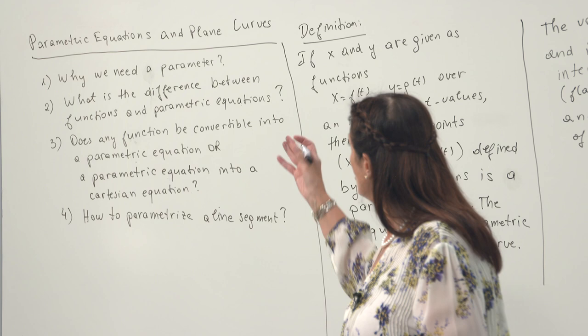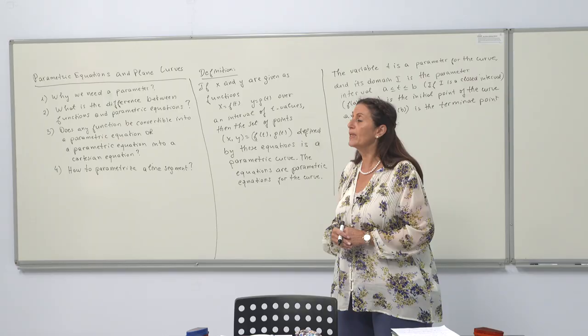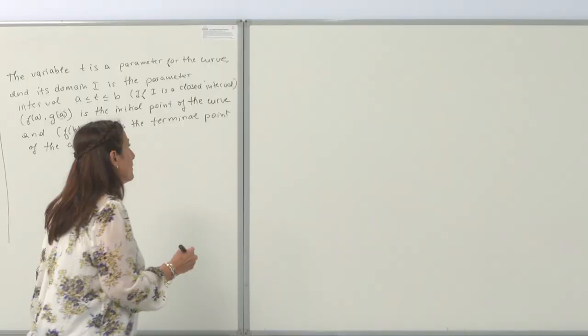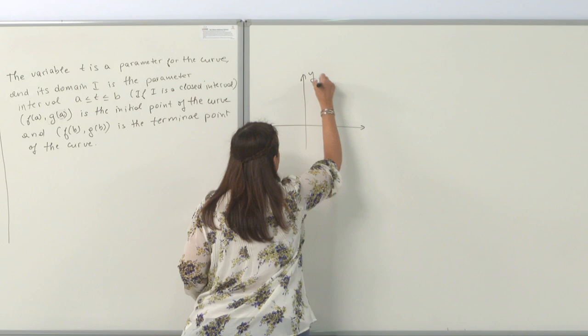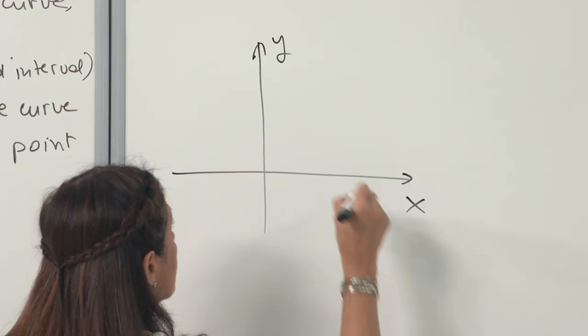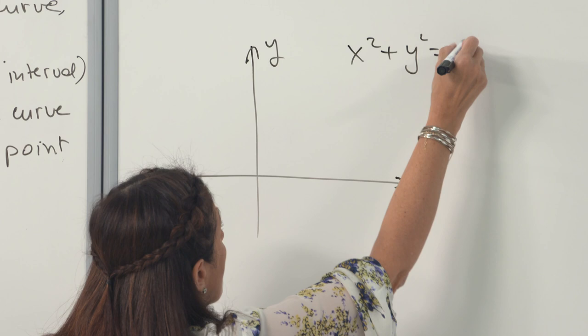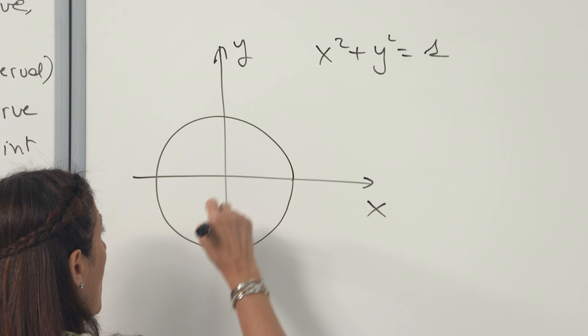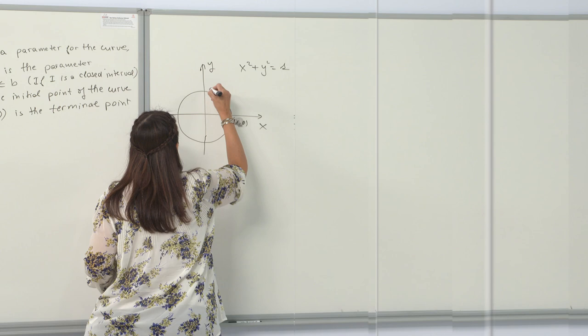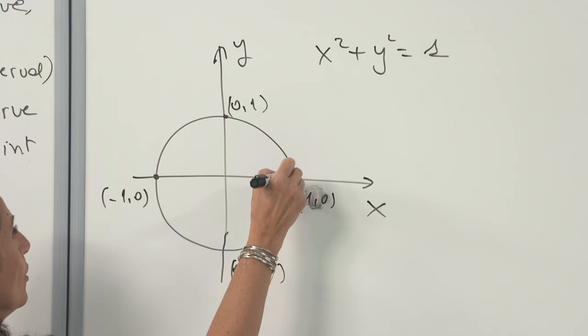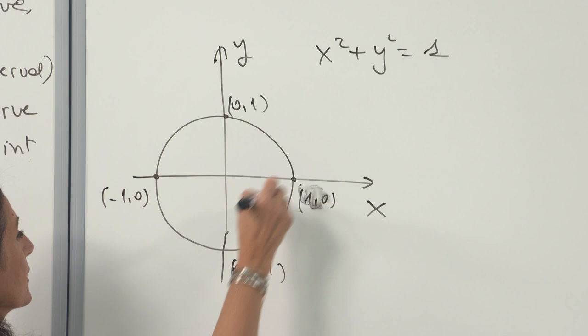First of all, let's address why we need a parameter. I want to give you two examples. We have a unit circle in Cartesian coordinates. The formula is x squared plus y squared equals 1, as you know. And I want to define a motion of a particle on this circle. These are our four points where it cuts the coordinates.